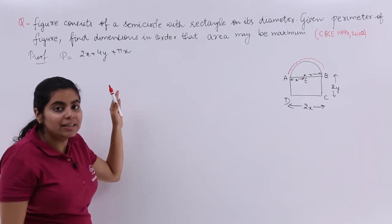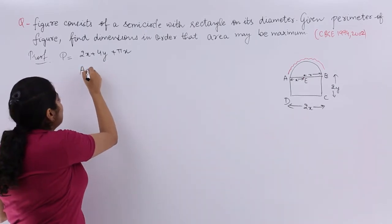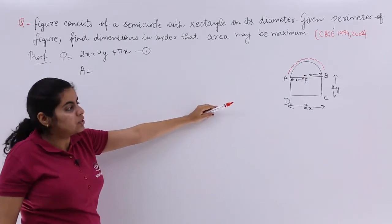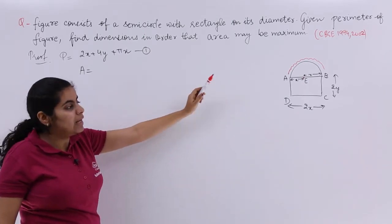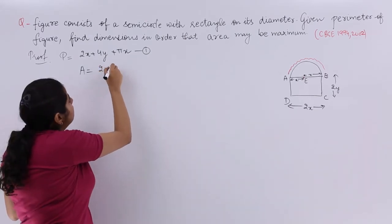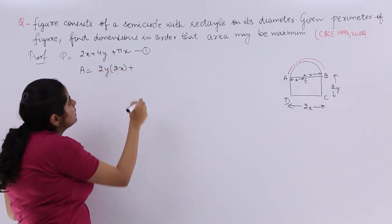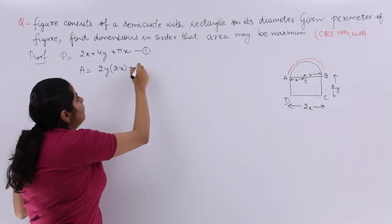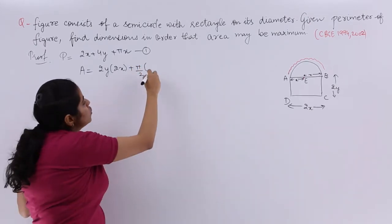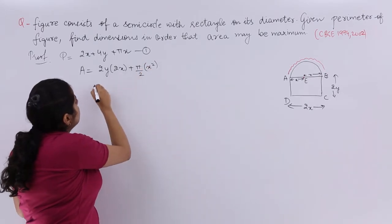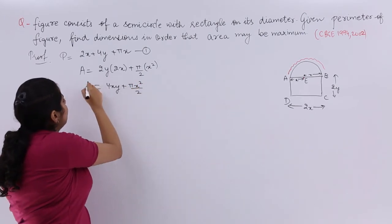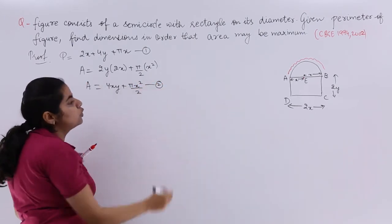And you know when you will find out A, what will be your A? It will be your area. Area is nothing but the area of the rectangle plus the area of the semicircle. What is the area of the rectangle? Length into breadth. What is the area of the semicircle? π by 2 r square, half of the area of the circle. So r square, it is nothing but 4xy plus πx² upon 2 which is your A and this is your equation number 2.